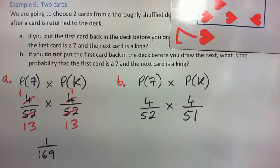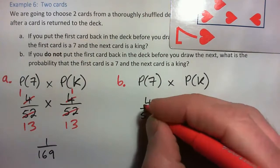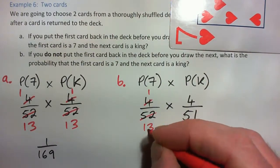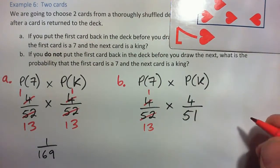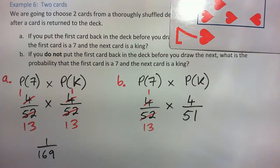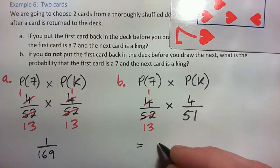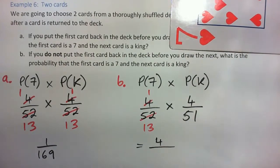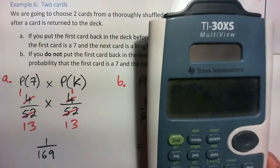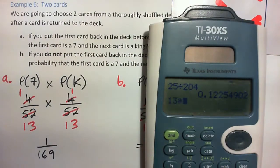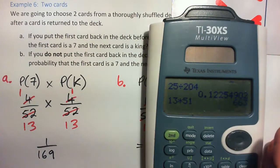So 4 into 4 goes once, 4 into 52 goes 13 times — and that's all the cross-cancelling we can do. This gives us 1 times 4 is 4 over 13 times 51, which is 663. So the answer for Part B is 4 out of 663.